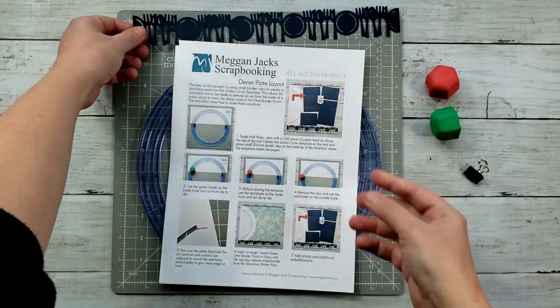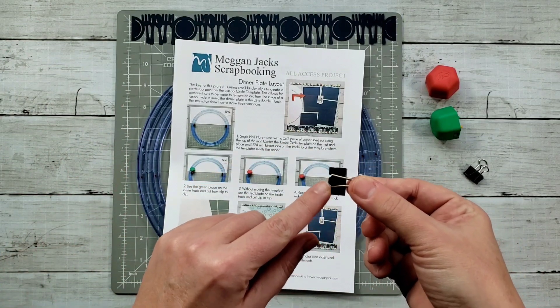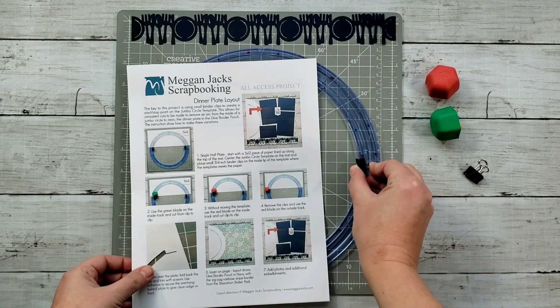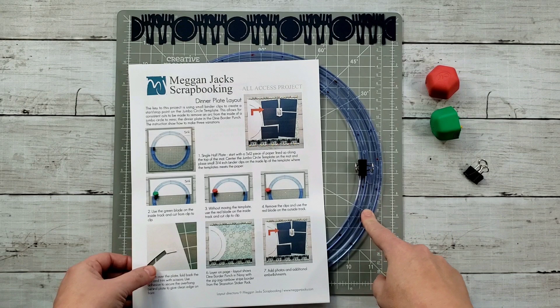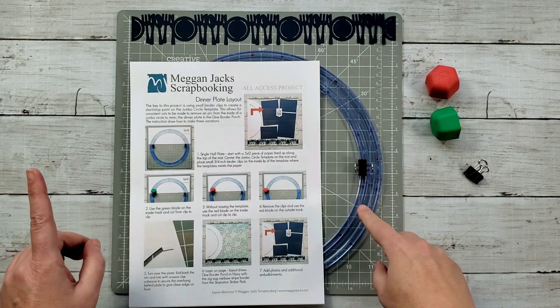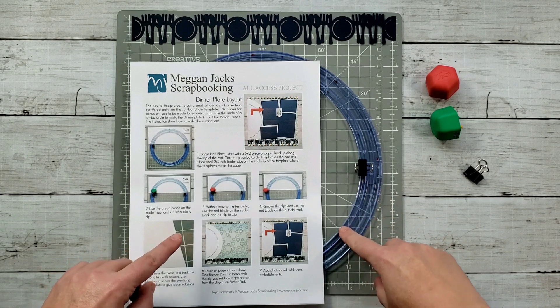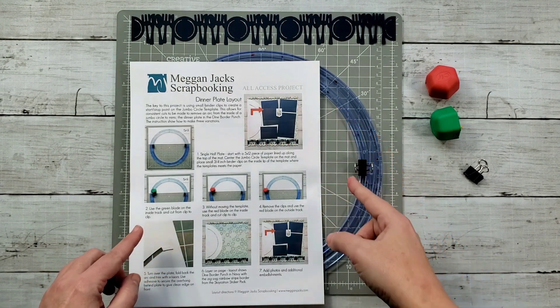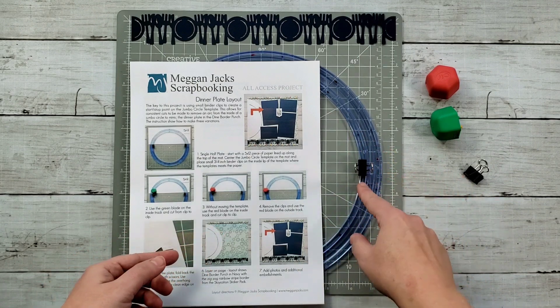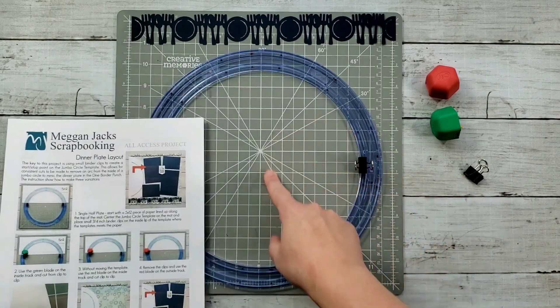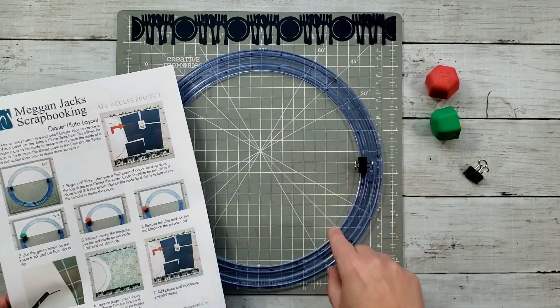I realized when I was messing around with the binder clips, which I've shown you before how to use with your 12-inch trimmer, these binder clips also work inside the templates of the custom cutting system from Creative Memories. Now they won't work with every single template. You have to make sure that the radius or the turning of the template allows for the straight edge of that binder clip to get in there. On some of the smaller circles that clip doesn't fit quite right, but for this jumbo circle it's going to fit great.